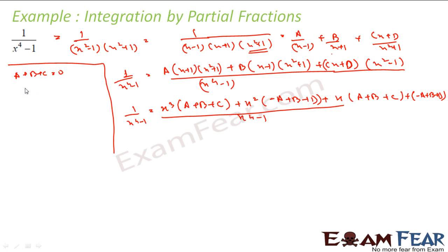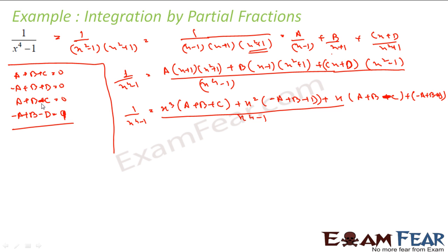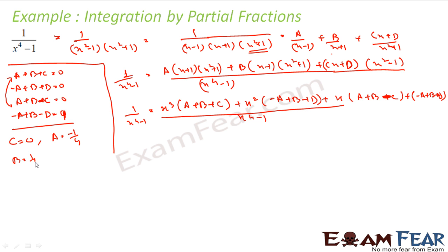Similarly, the coefficient of x squared is also 0, so minus a plus b plus d equals 0. The coefficient of x is also 0, so a minus b minus c equals 0. And the constant term equals 1, so minus a plus b minus d equals 1. Solving these equations — adding pairs — we get c equals 0 and a plus b equals 0. Continuing to solve, we get a equals minus 1 by 4, b equals 1 by 4, and d equals minus 1 by 2.